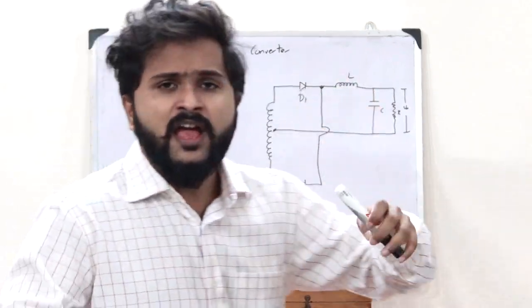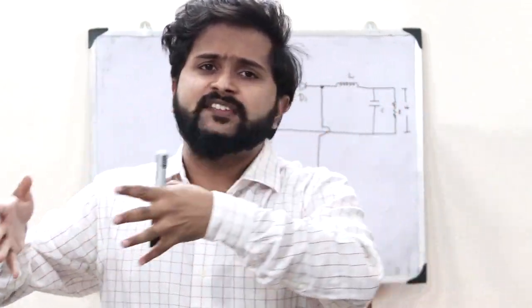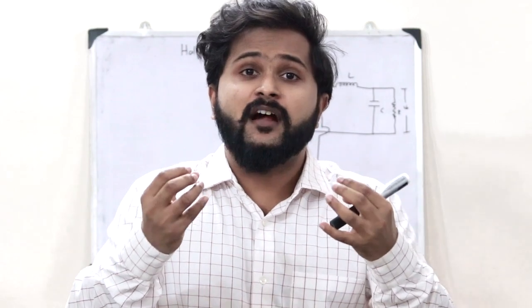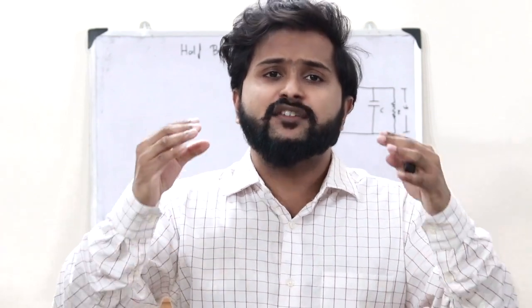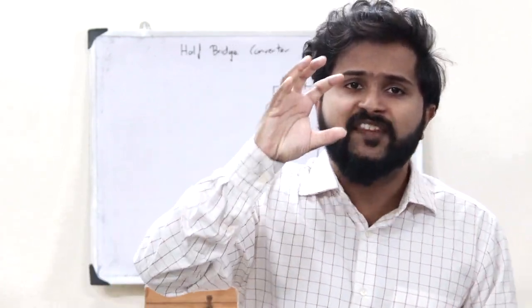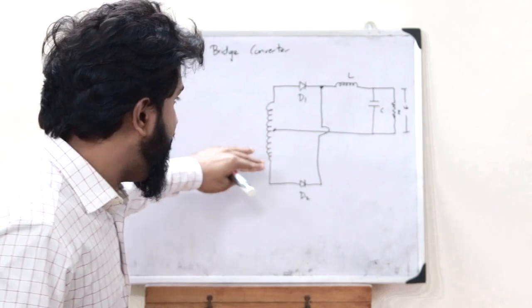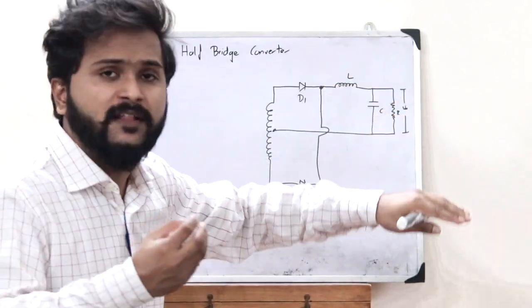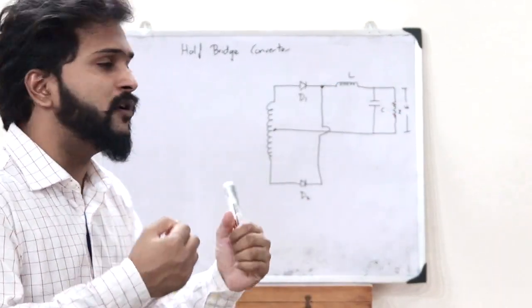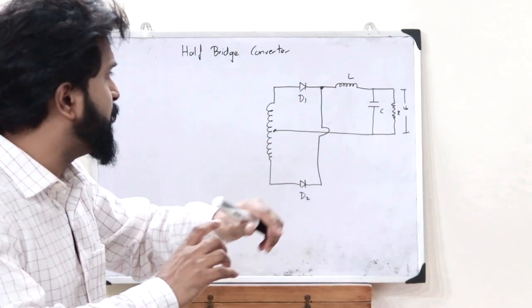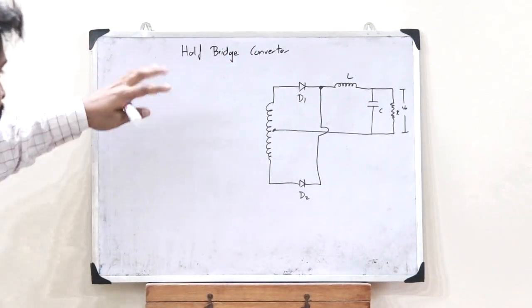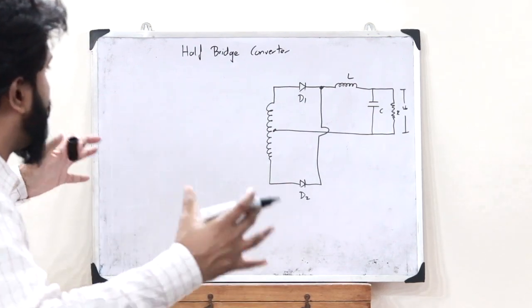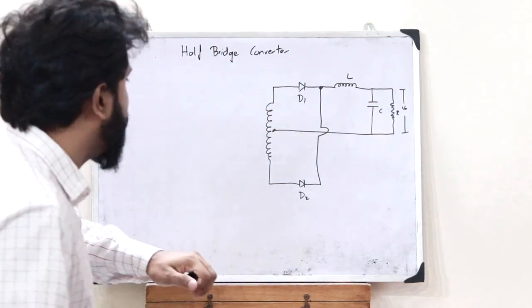A half bridge converter is a kind of DC to DC converter — that is, it converts one form of DC voltage to another form of DC voltage. In the case of a half bridge converter, the secondary circuit is the same as what we saw in the case of a push-pull converter. But here the difference comes in the primary circuit, so let's construct the primary circuit.